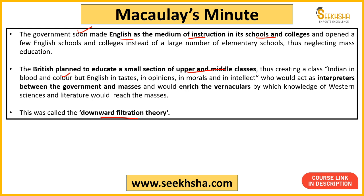Under the Downward Filtration Theory, the British argued: educate a small upper and middle class with Western education, create people who in blood and color are Indian but whose taste, opinions, morals, and intellect are English. These educated people would act as a link — interpreters — between the government and the common people. The education and science given to them would slowly filter down to the vernacular, local population below. This theory ultimately failed and could never have succeeded, because those whose taste had already been changed would not pass it down.